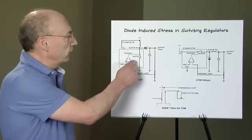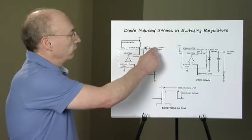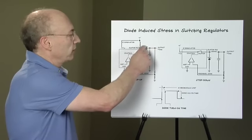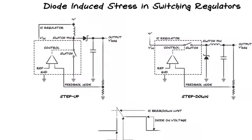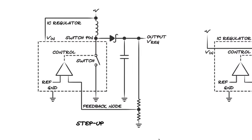In a typical boost regulator, the output voltage is nominally about one diode drop above the switch pin maximum voltage, but at extremely high speed the diode takes some time to come on.